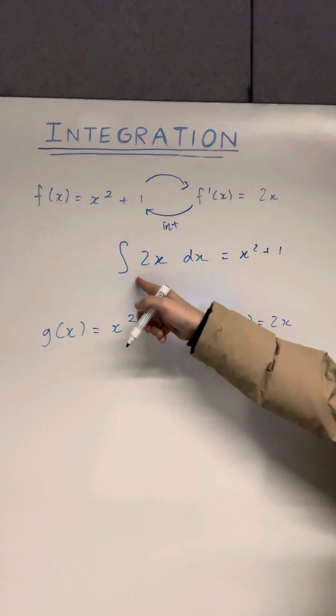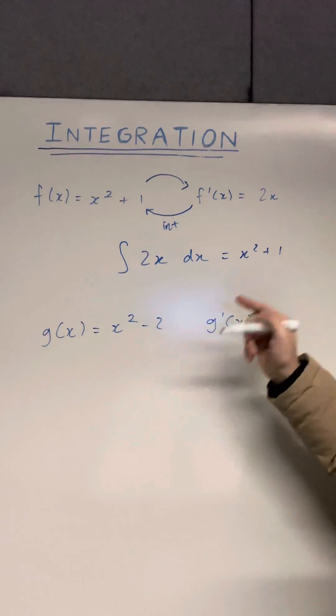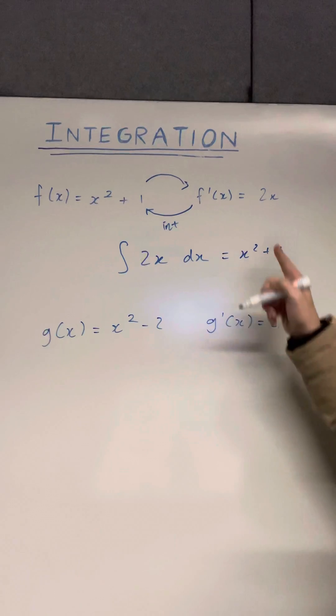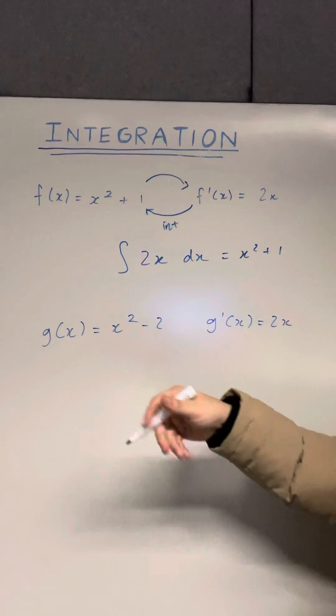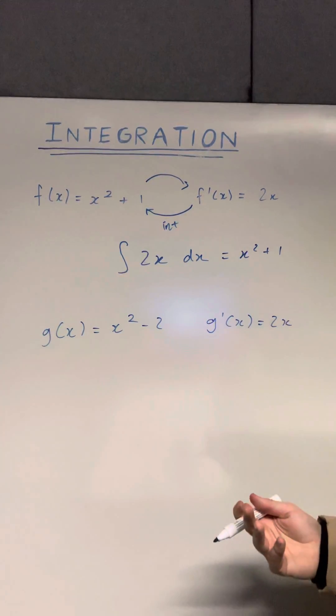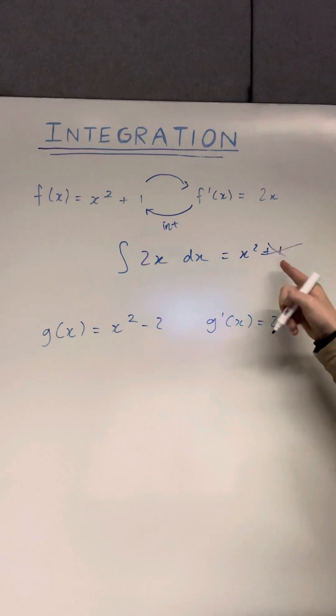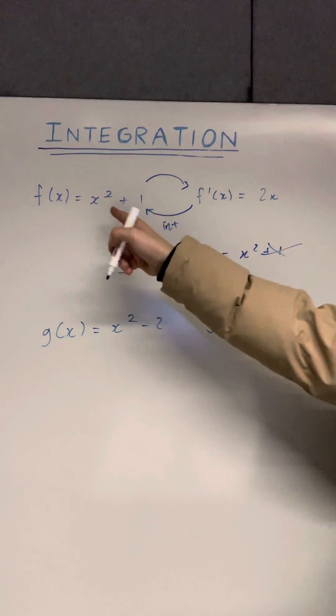But the thing is, how do we know that the integral is plus one instead of minus two? Because both of these, if we integrate them, we should get x squared plus some other constant back. In this case, we actually don't know that the constant is one. I just use that from this specific example.